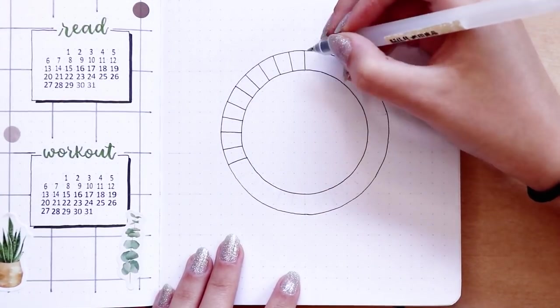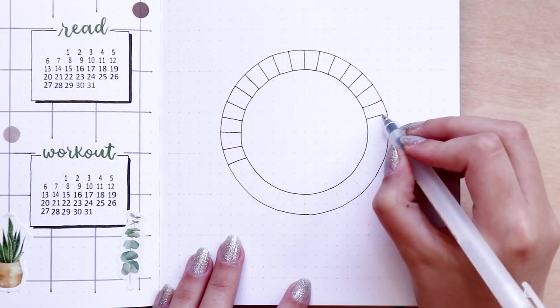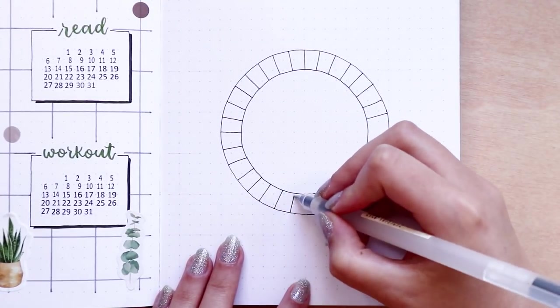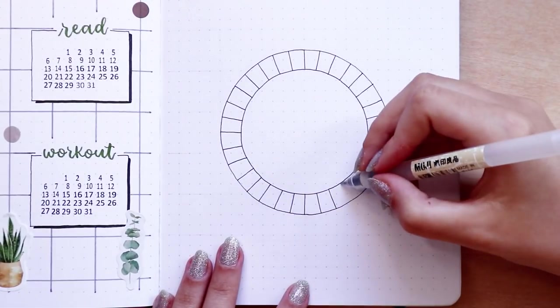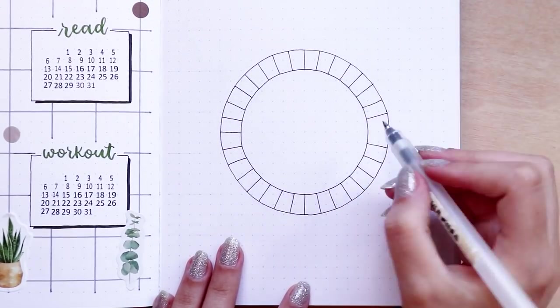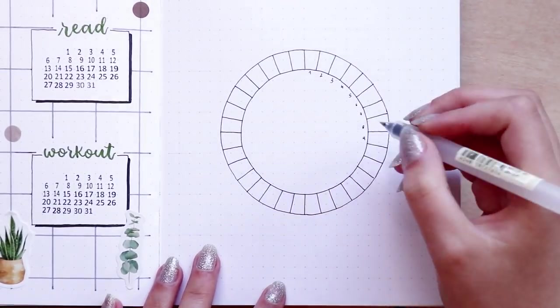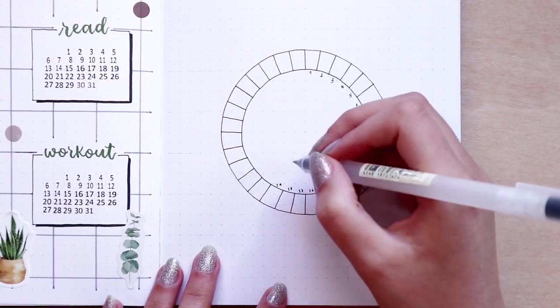So I did two huge circles in the middle of the page and I'm dividing the circles into 32 sections for the 31 days of the month. At the bottom I'm adding a simple legend of the mood that I'm going to track and the colors that I will use.